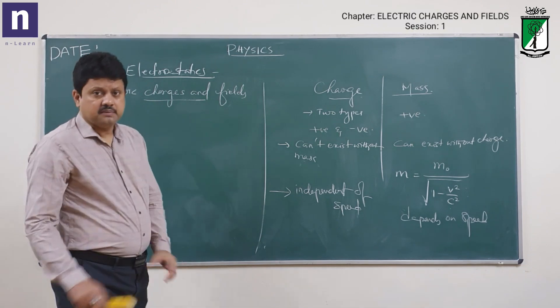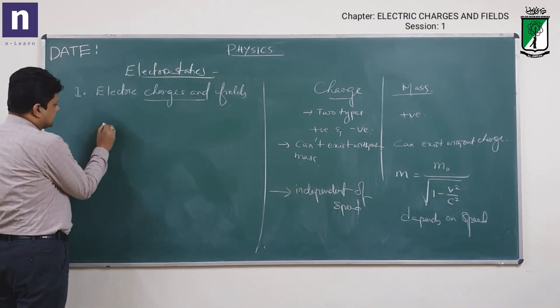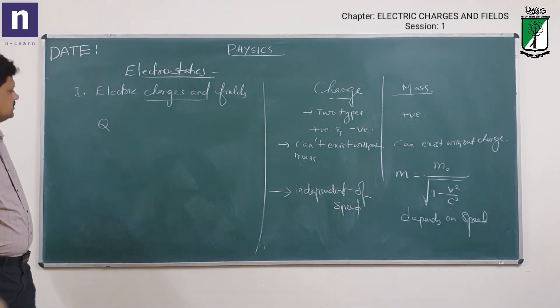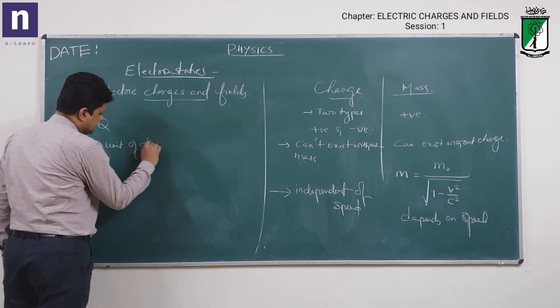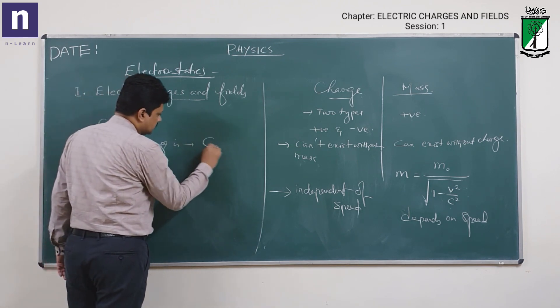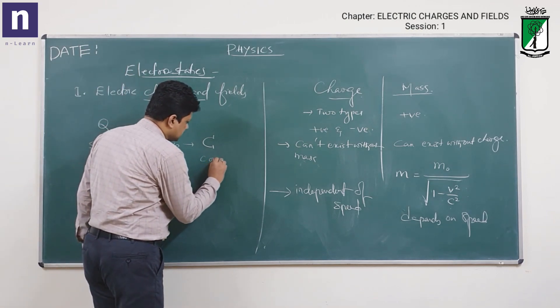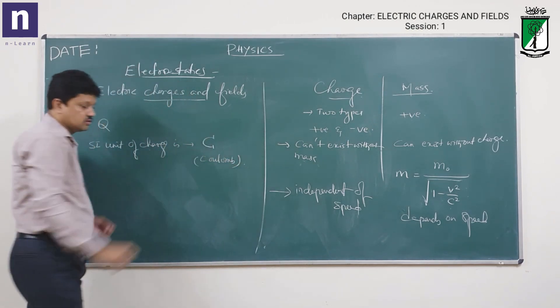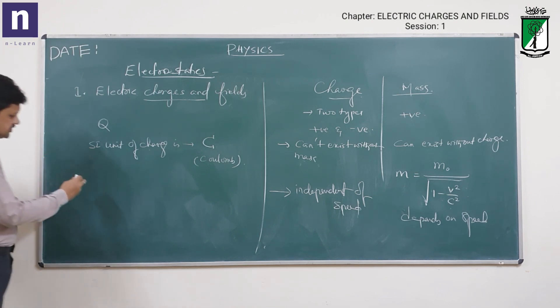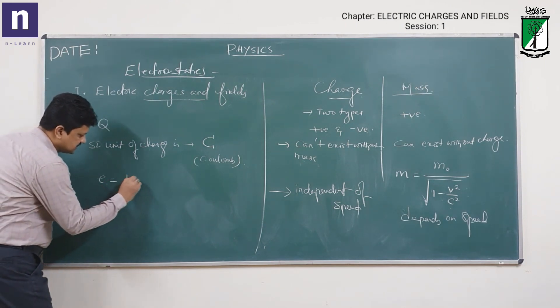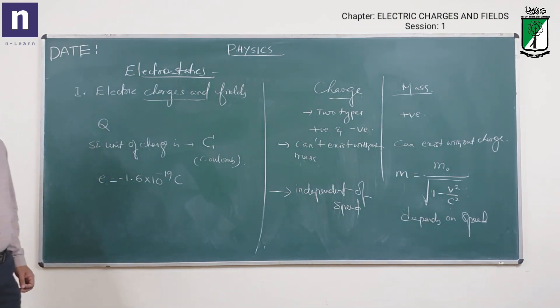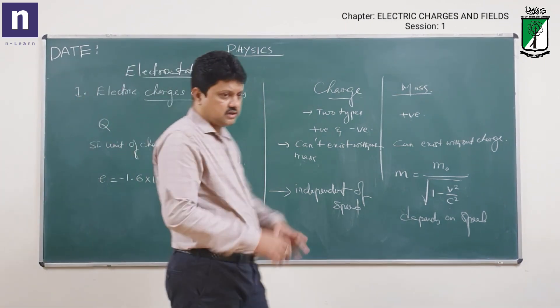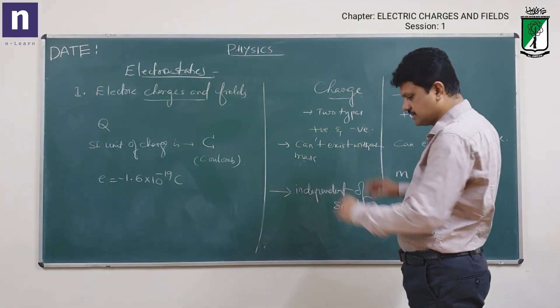Let me tell you some basics of charge. Charge is denoted by Q, as you already know. The SI unit of charge is Coulomb. If you take one electron, one electron charge is 1.6 into 10 to the power minus 19 Coulomb. Of course, it is negative. If you take the charge on a proton, it will be the exact same but positive. Electron and proton have opposite charges. These are the basic things related to charge.